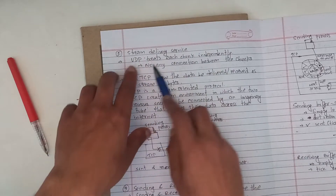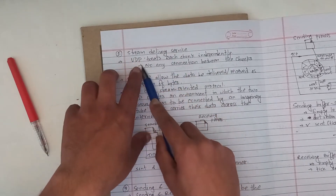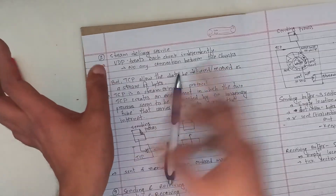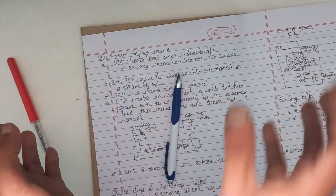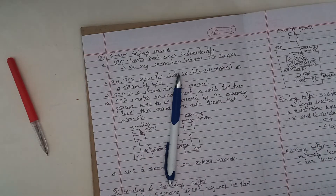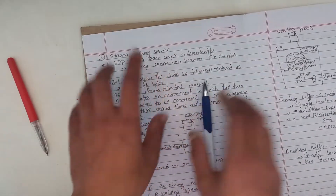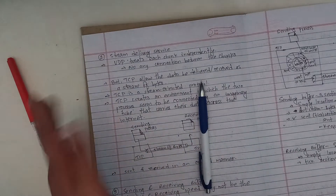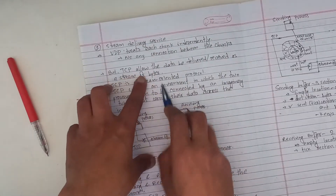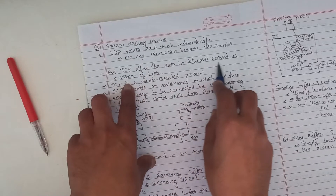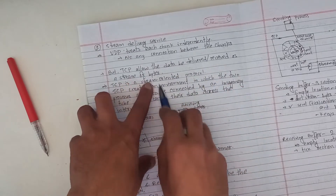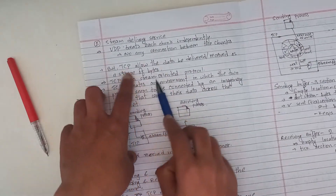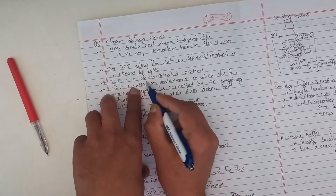Another service is stream delivery service. In UDP, datagrams are treated independently - each chunk is independent, there is no connection between the chunks. What does TCP do differently? The data is delivered and received as a stream of bytes. TCP is a stream-oriented protocol.